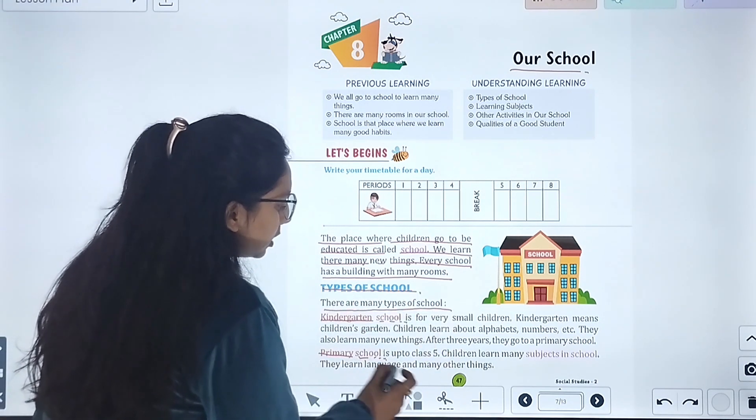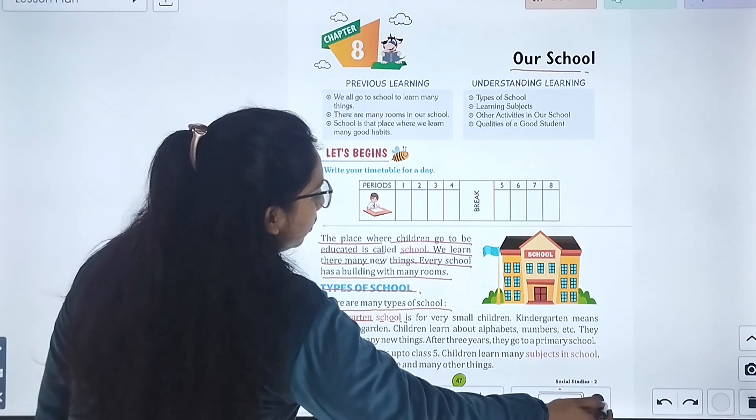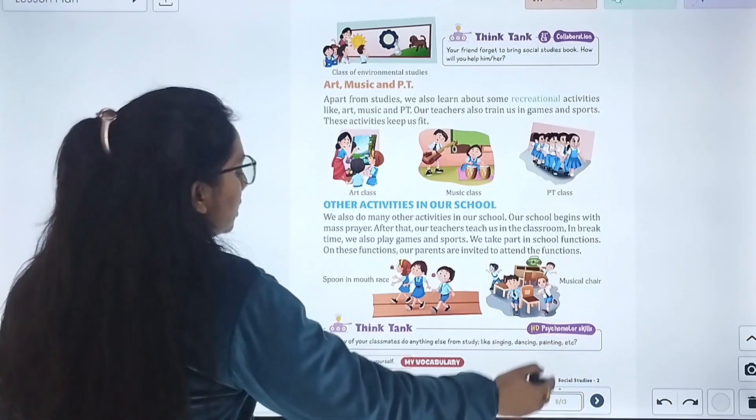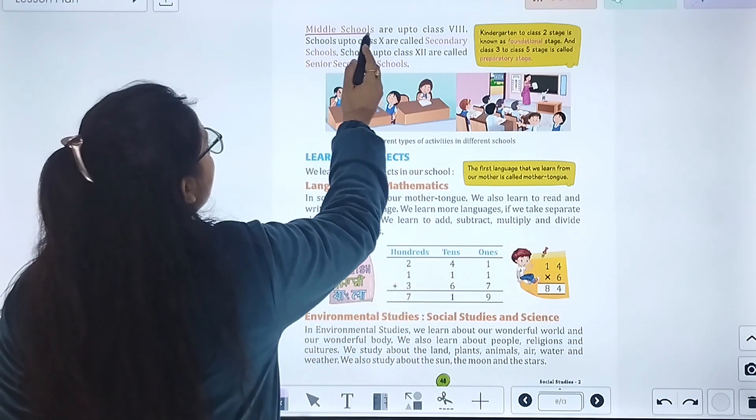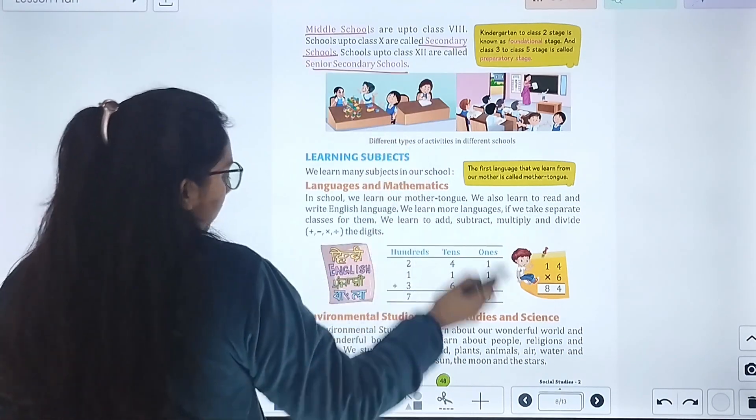There are many types of schools, many kinds of schools: kindergarten school, primary school. There are some kindergarten and some primary schools. We will study about both schools, middle schools, secondary schools, and senior schools.